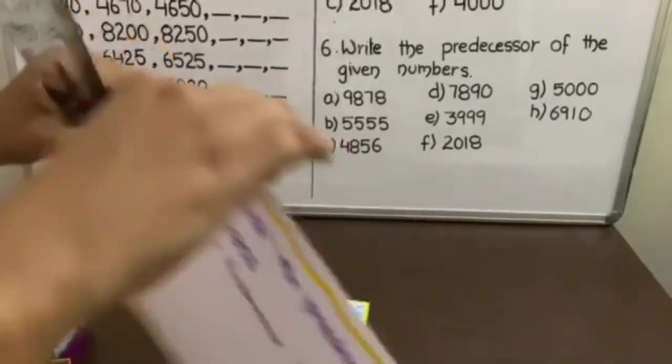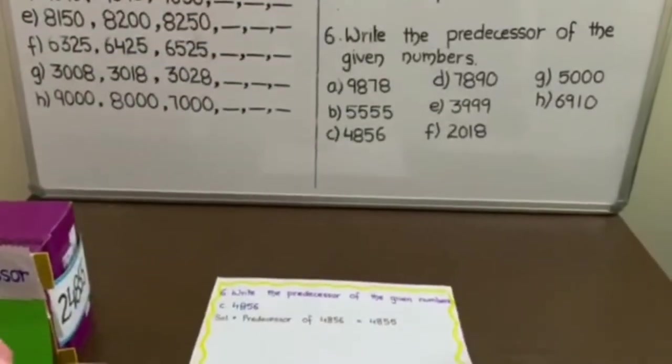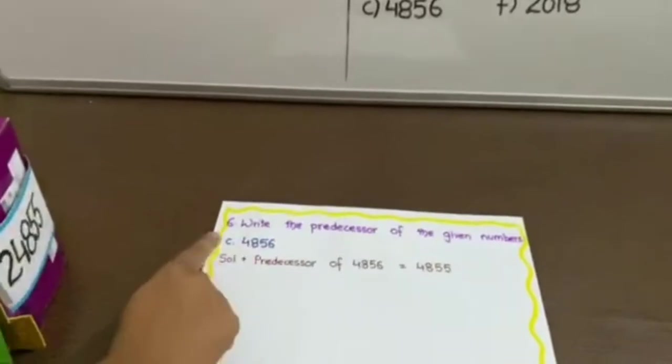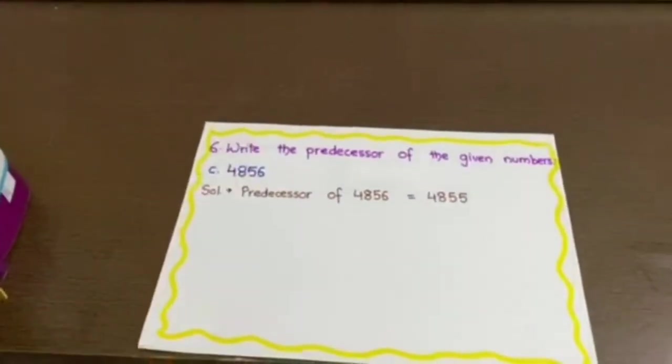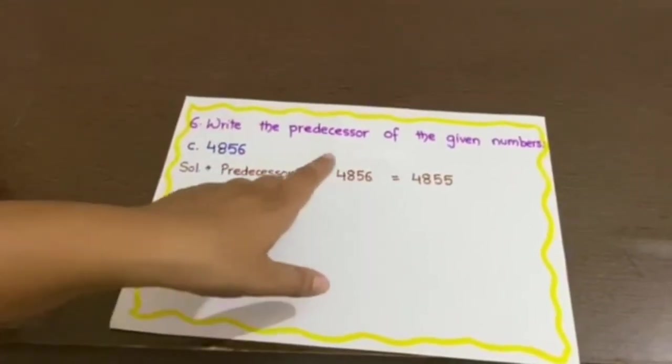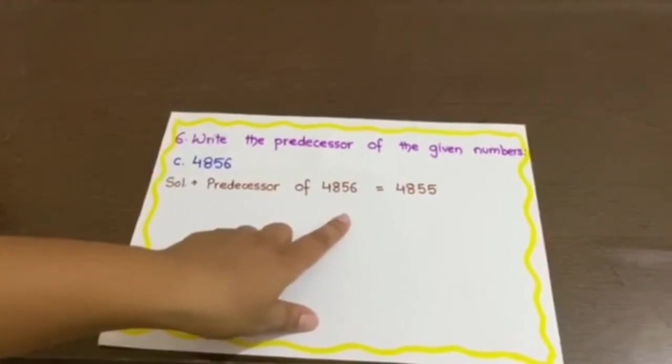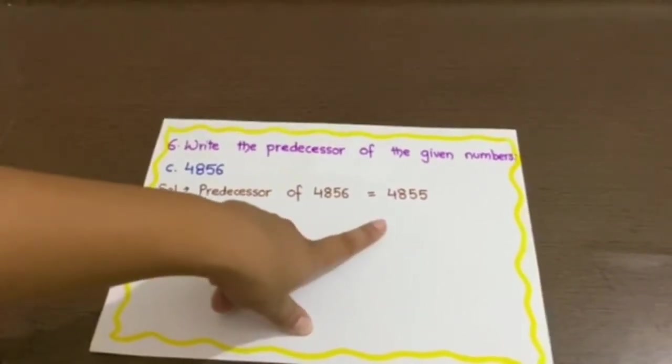To solve this in your notebooks, write the question, then the part you are answering and solution. That is, predecessor of 4856 is 4855.